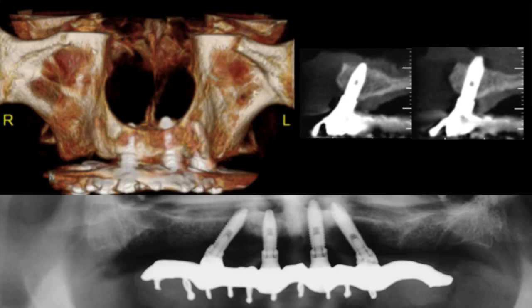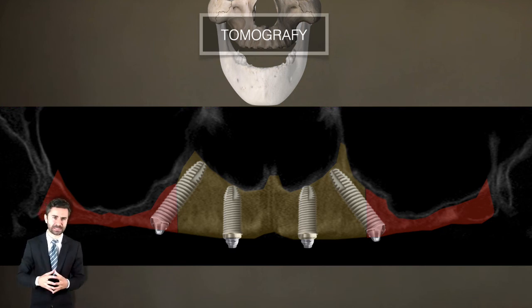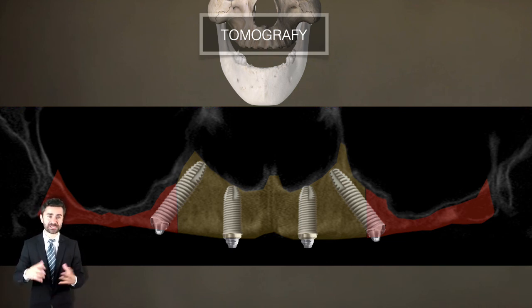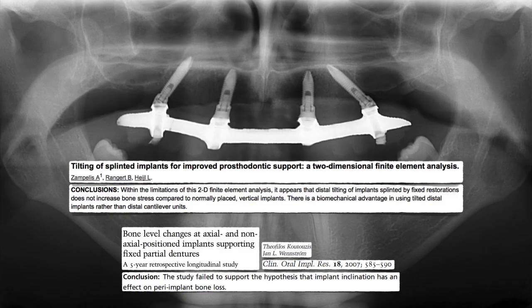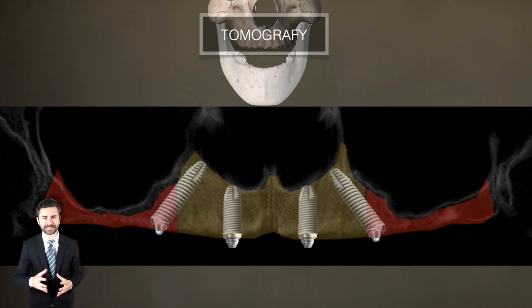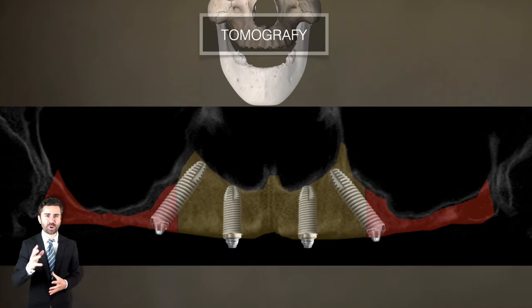The fact that the implant is being corticalized, especially when bone height is reduced, can be the decisive factor between a high or low insertion torque. In addition to these implants being placed in a region of great bone density, it is preferable to use longer implants — usually 17mm in length. A question that always arises in face-to-face classes: will tilting these implants promote bone loss? The answer is no. Several studies support that there is no bone loss in tilted implants. Reducing the cantilever is more important than keeping the implants straight.